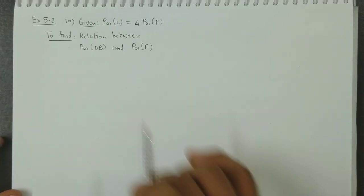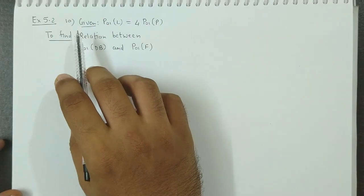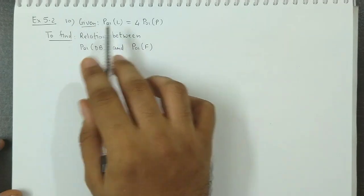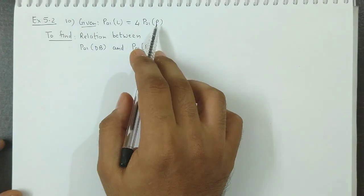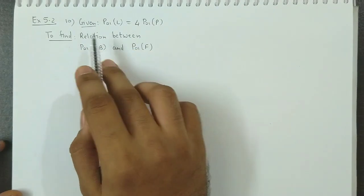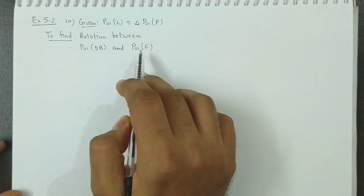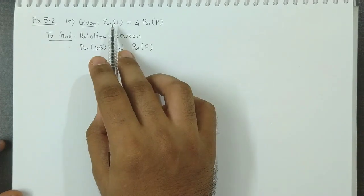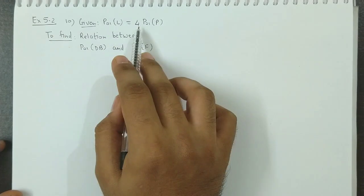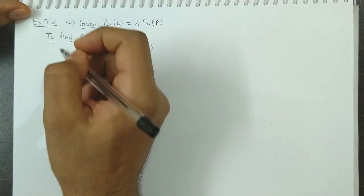XS 5.2, Question No. 10. We discuss the condition given: Laspeyres' index is 4 times Paasche's index. We have to find the relation between Dorbisch-Bowley's index and Fisher's index. So let's see how we use this.